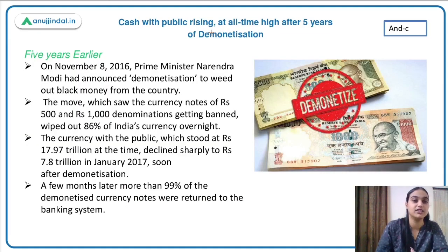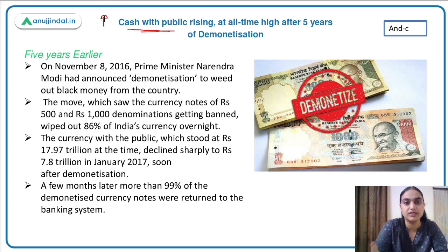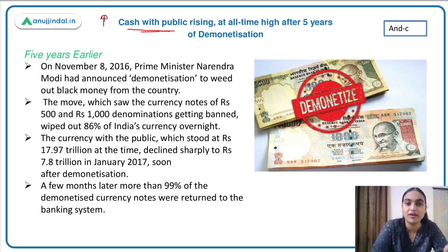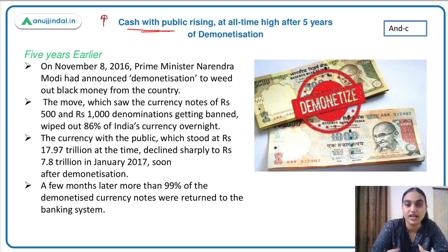It was recently reported that the cash with the public has risen to an all-time high. There are two things to understand: first, currency in circulation — the physical money released in the economy that people can use for economic and business transactions — and second, currency with the public, which is currency in circulation minus the money held by banks. Both currency in circulation and currency with the public have been rising and have reached all-time high levels.